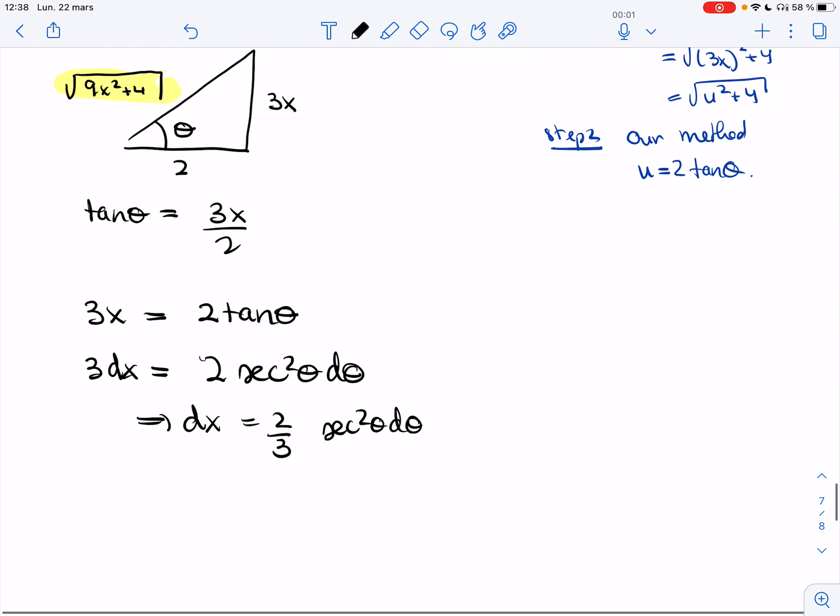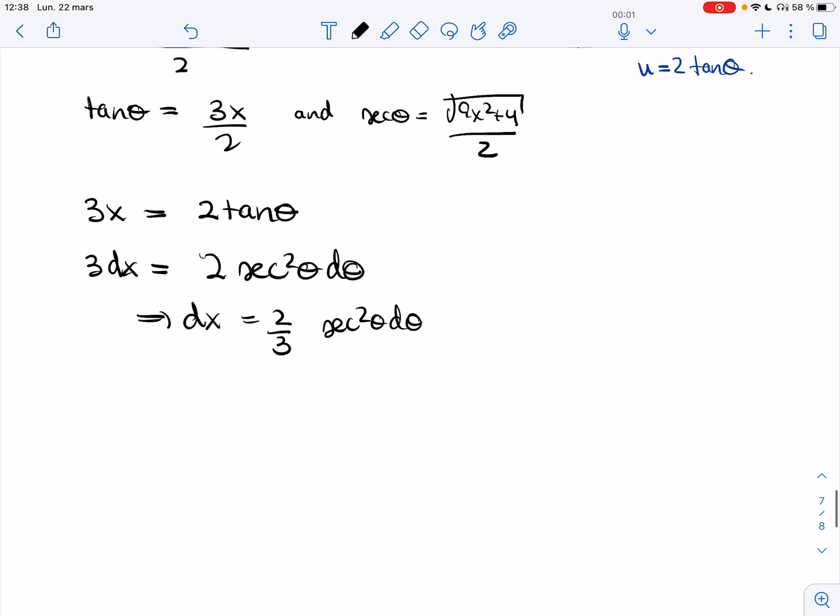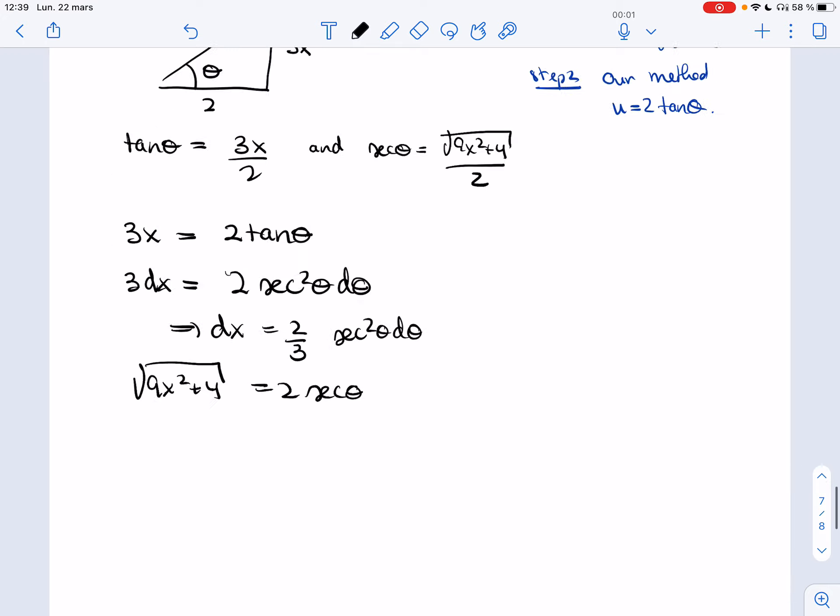And using the triangle again, secant square theta will be the square root divided by adjacent, so 2. And so my square root is 2 secant theta.